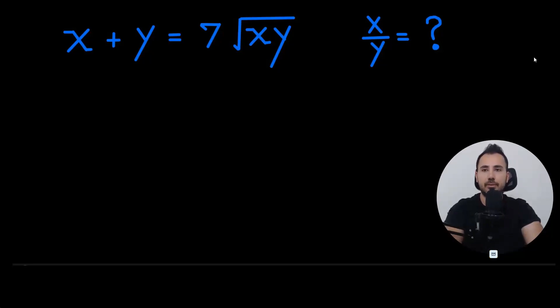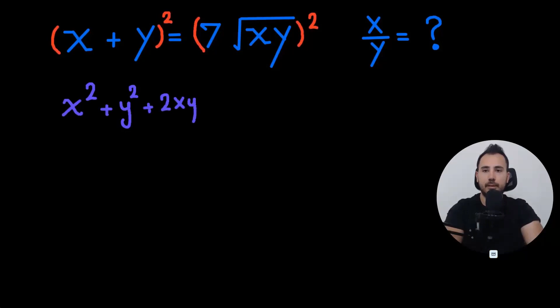I think it makes sense to square both sides of the equation to get rid of this radical sign. Let's do that. So we're going to use the first binomial formula, x squared plus y squared plus 2xy. And the right-hand side will be 49xy.